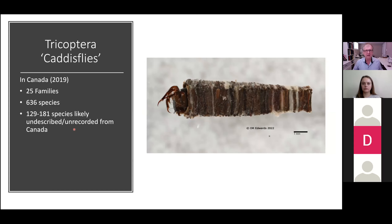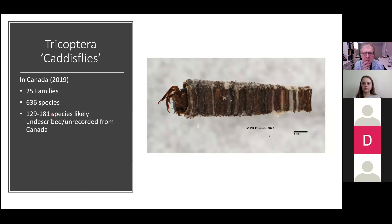On to caddisflies — this includes the apotanids I was showing earlier, isn't it cute with its little house. Canada-wide there are 25 families and 636 species, and look at the number of undescribed or unrecorded species expected — phenomenal. A lot of this has to do with DNA barcoding: there are a whole bunch of barcodes that can't be matched to any known species from Canada, and a large number of the described caddisfly species are now barcoded, which is where those shocking high numbers come from.